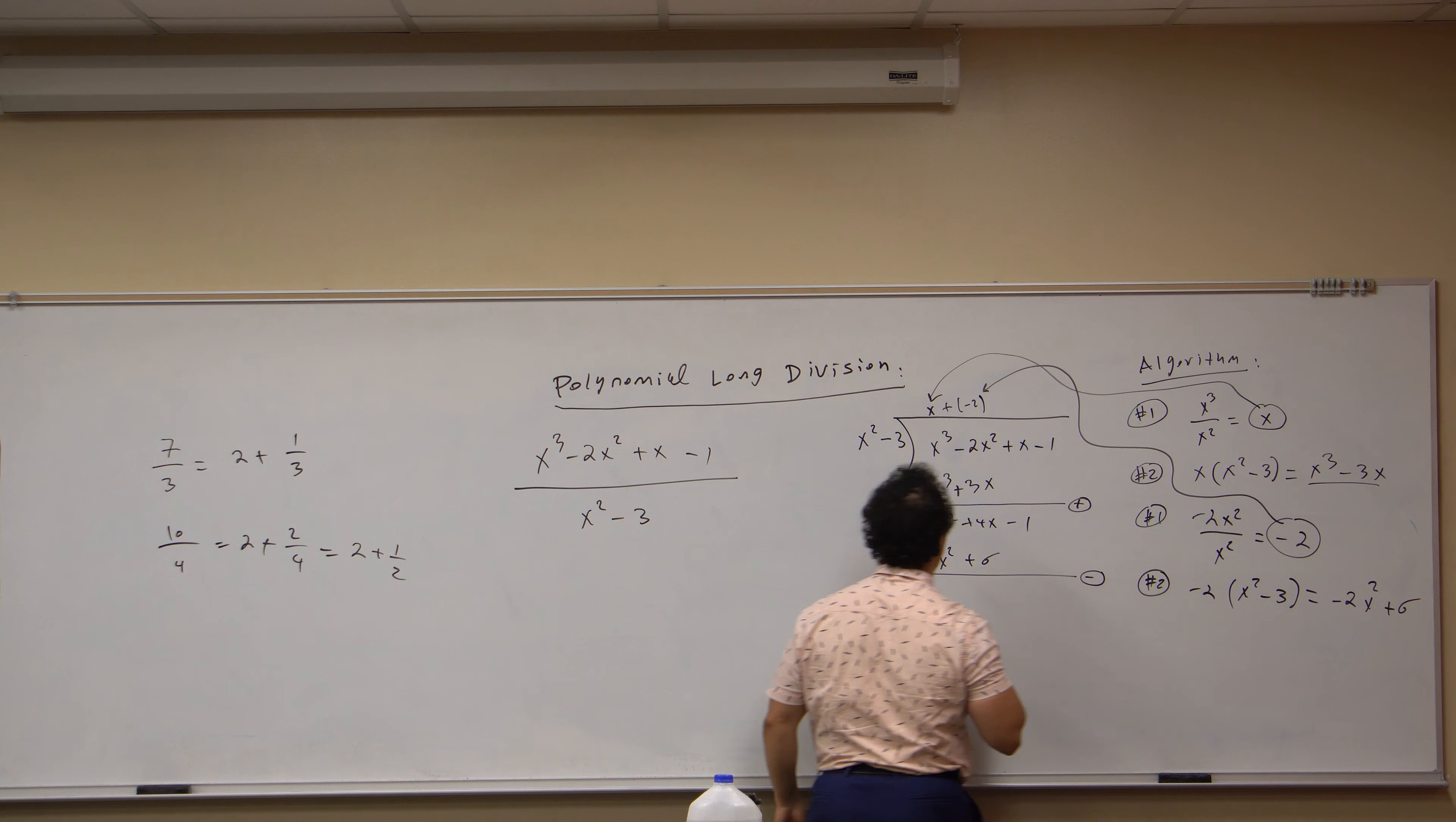Then group like terms. These two cancel to give me zero. Then the four x comes down, four x, and the minus six and the minus one give me a minus seven here.